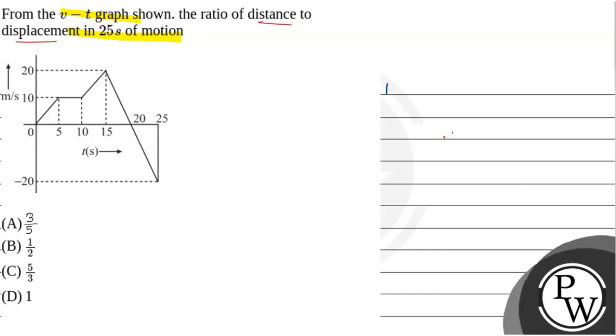In this question, our key concept will be: area under v-t graph. Area under v-t graph, that is displacement.